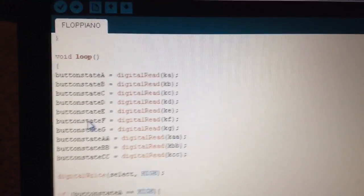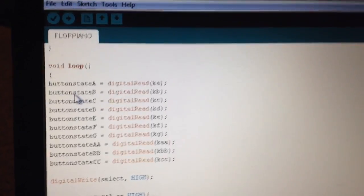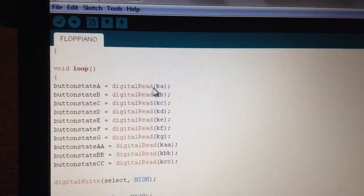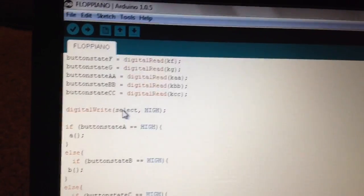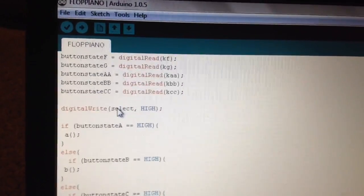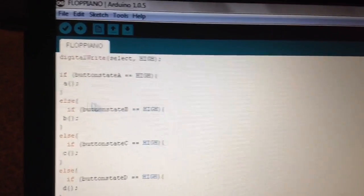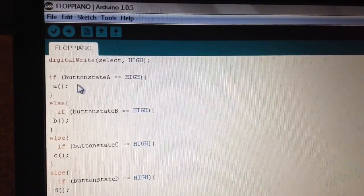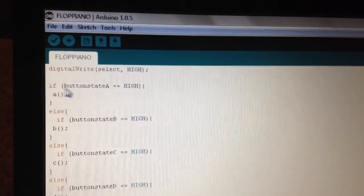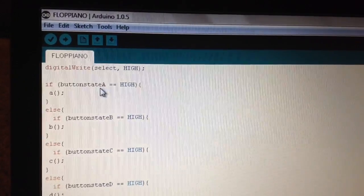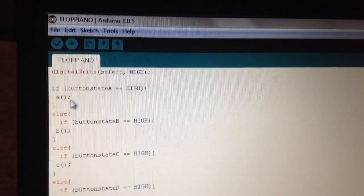In void loop, the first thing that I have is the button states corresponding to the key which they represent. Then, I have the select pin on high, which I will explain even later in the video. Then, I have a bunch of if-else statements nestled inside each other. I have the first if statement, if the a key is high, then it plays a.